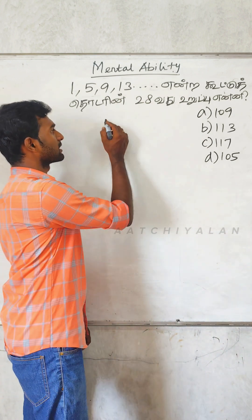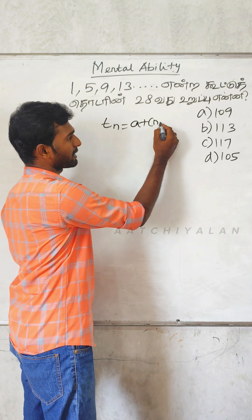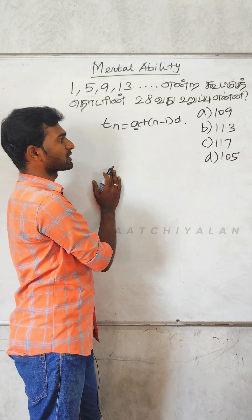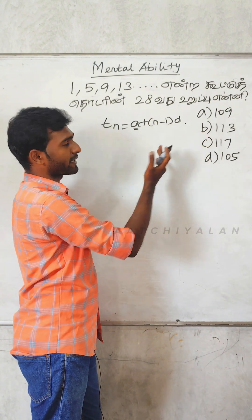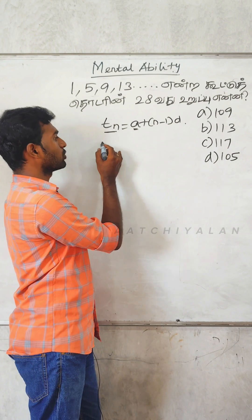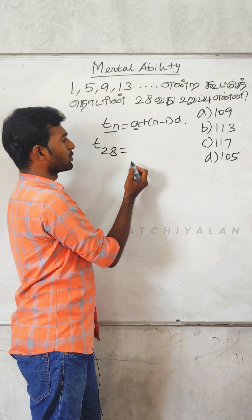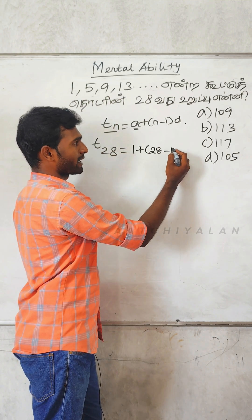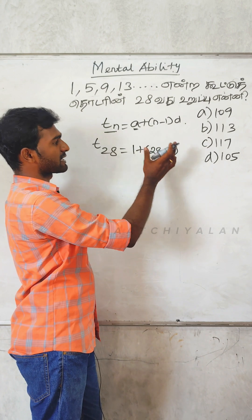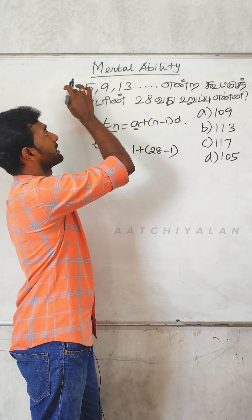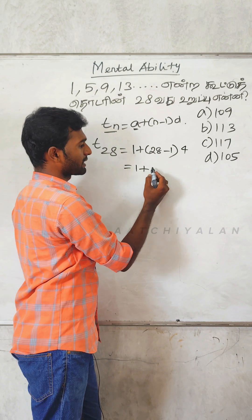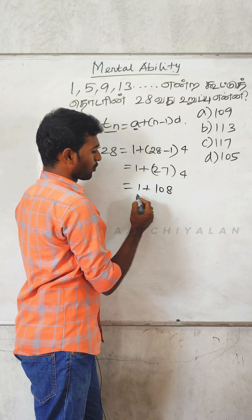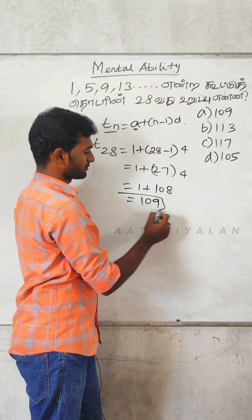The basic formula is tn is equal to a plus n minus 1 into d. The first difference is 5 minus 1 equals 4. So 1 plus 27 into 4 equals 1 plus 108 is 109. So option A.